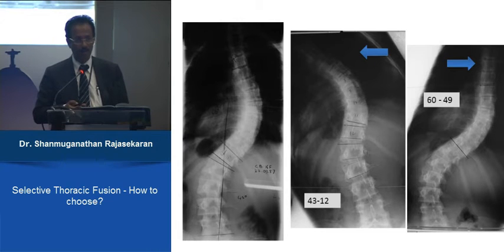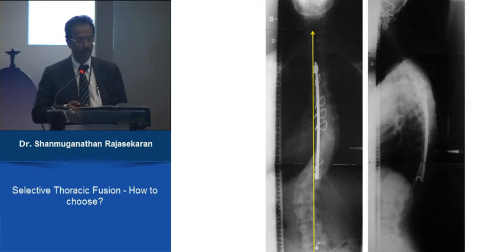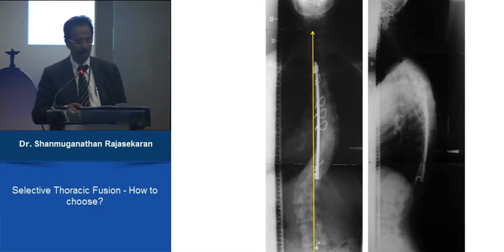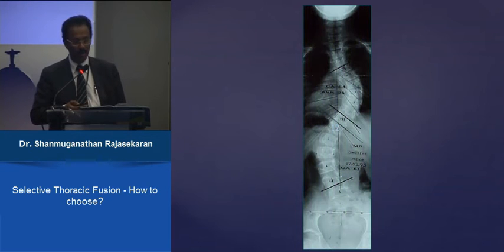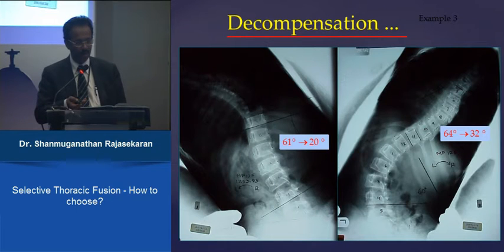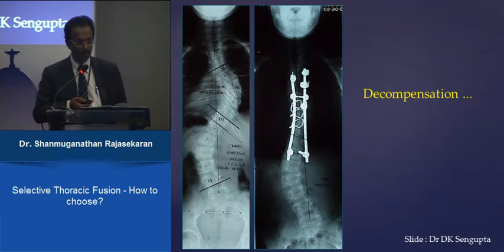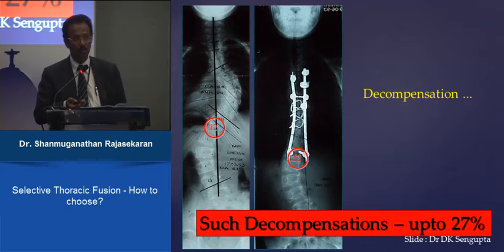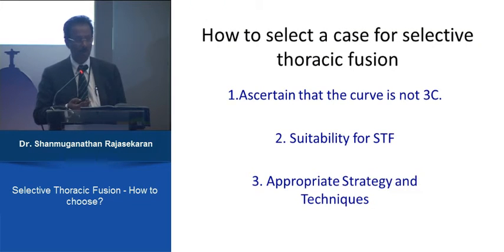This was less of a problem during King's era when only distractive force was used without effective derotation instruments. A partial correction of the thoracic curve with a persistent lumbar curve still left the patient looking compensated. However, with modern selective thoracic fusion using pedicle screws and sub-laminar wires, if the thoracic curve is overcorrected, the lumbar curve can decompensate significantly. We need to be very clear on how to select patients and avoid this decompensation.